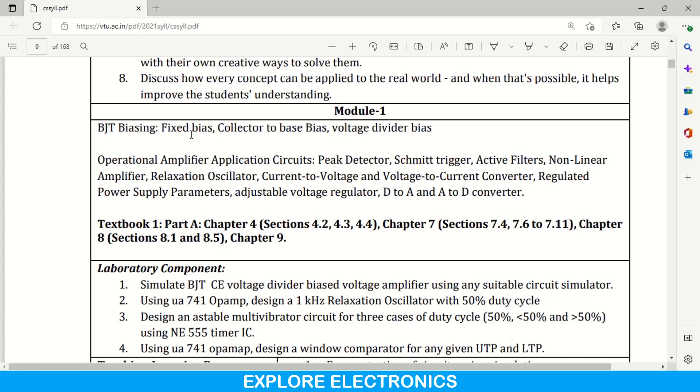So let us get into the module-wise syllabus and see what is there. This is module one. In module one you can see this is an analog electronics part. In the subject name itself we have seen analog and digital electronics. Module one will be consisting of analog part. Here the first concept is BJT biasing means it is with respect to transistor biasing NPN and PNP transistors connection and how biasing will be done will be covered in the first topic.